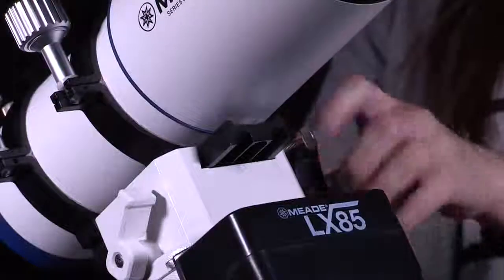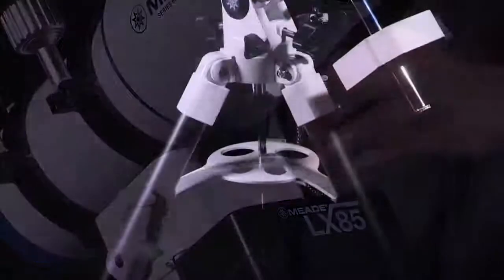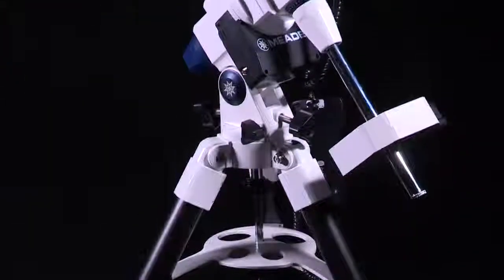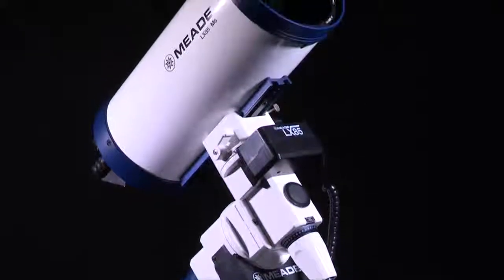The LX85 features a Vixen-style dovetail receiver for mounting observing equipment up to 33 pounds, coupled with a sturdy build and low-cog servomotors that ensure smooth tracking performance. This stable mount can impressively handle slight load imbalances with ease.